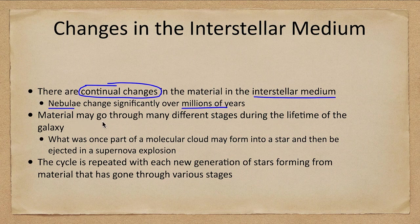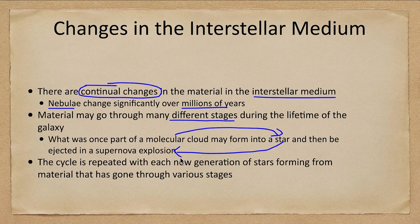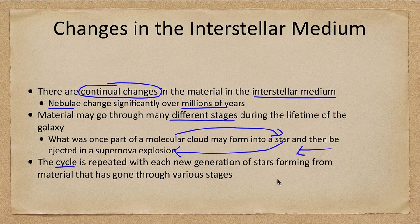Material may go through many different stages during the lifetime of the galaxy. What was once a molecular cloud can form into a star, and then the material from that star could be ejected in a supernova explosion back out into the interstellar medium. When this happens the composition changes. This cycle is repeated with each new generation, giving us new generations of stars that form from material that has gone through these various stages.